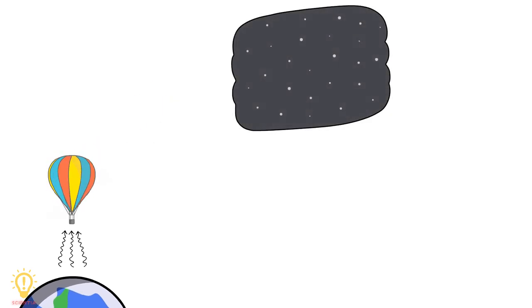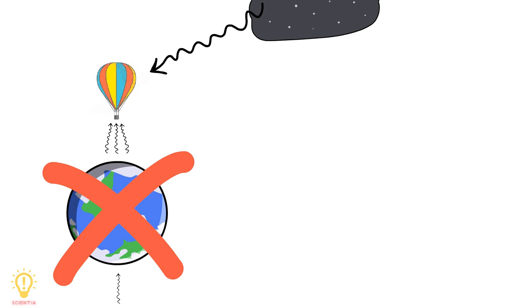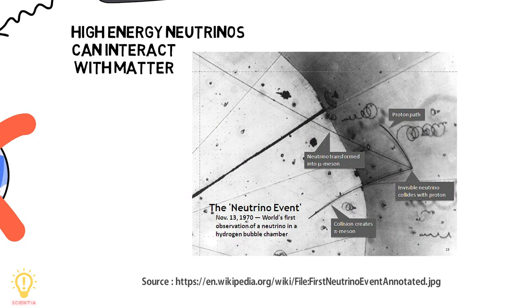But high-energy neutrinos are expected to come from the depths of cosmos and not through Earth, because chances are good that they would have smacked into something else before getting all the way through our planet.